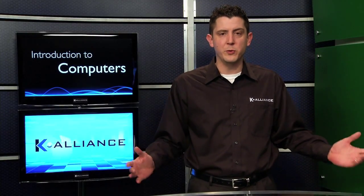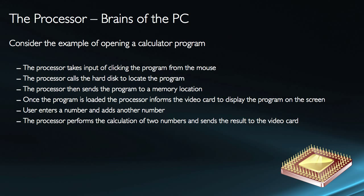What do you need to know about the processor? We could probably say it's involved in absolutely everything that you do. The processor does all the calculations — let's use an example to give us a better idea. Consider the example of opening a calculator program. The processor takes the input of clicking on the program from the mouse. I clicked my start menu, and the processor displayed the start menu. I found the calculator program and opened it. The processor then makes a call to the hard disk, which is where the program is actually located, and locates the program on the hard disk.